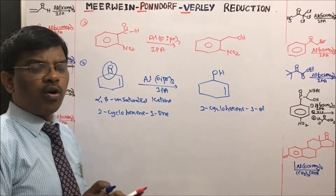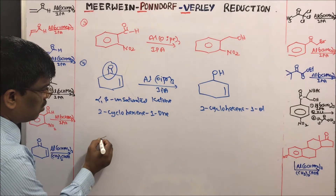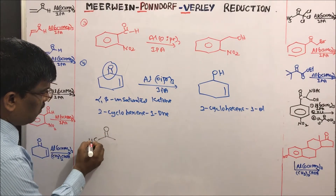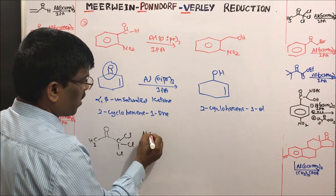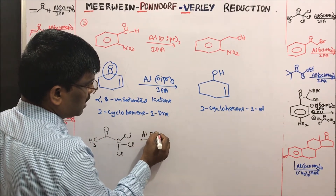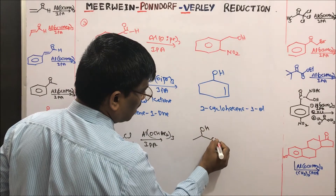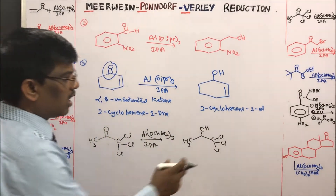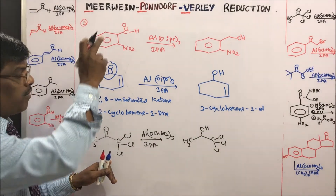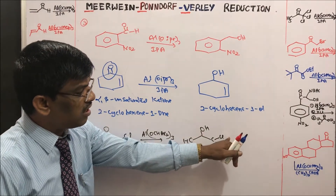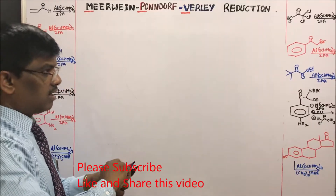MPV reduction chemoselectively reduces only the ketone to alcohol. Alpha-halo groups also remain intact — the halogen is not disturbed. For example, trichloroacetone reduced with aluminum isopropoxide in isopropyl alcohol gives trichloro isopropyl alcohol. If LAH were used instead, the chlorines would also be reduced.